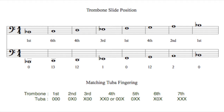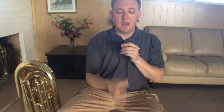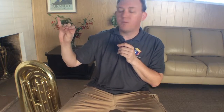Fourth position would be first and second valve, or sometimes they use the third valve, which is the same as one and two. Fifth position would be two and three on the instrument. Sixth position — remember how we always have to go way out there — that's where valve instruments have it easy: they just press one and three. Seventh position is all three valves down at the same time. Take a look at the screenshot of how the slide positions and valve combinations correlate, because they'll be exactly the same.